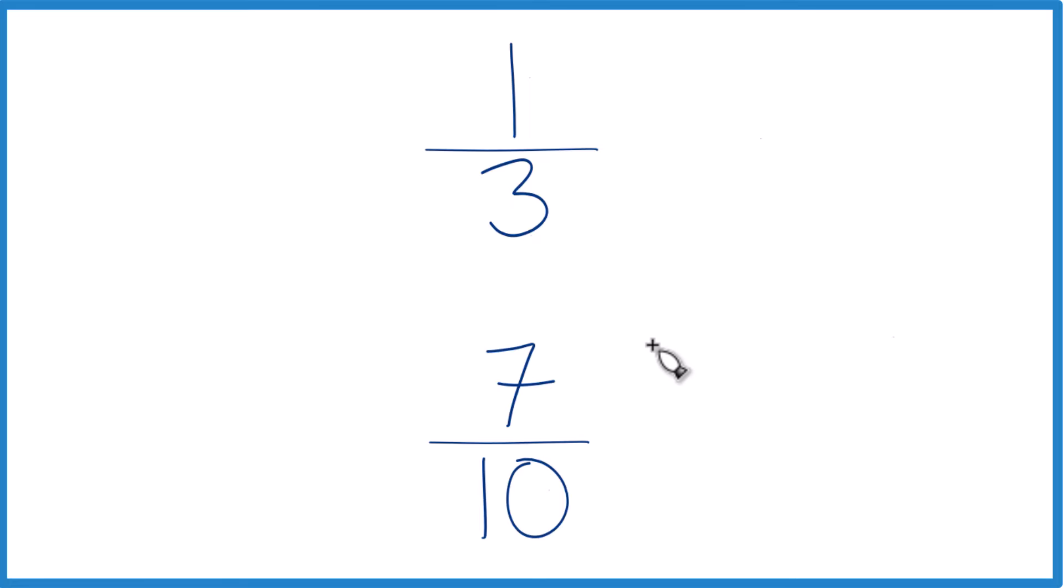The other way to do it is find a common denominator. Right now we have three and ten. But if those are the same, then we could just compare the numerators and we'll know whether one-third is greater than, less than, or equal to seven-tenths.